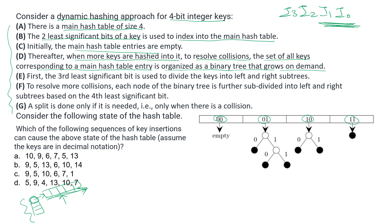How does the tree exactly grow? The third least significant bit, i2, is used to divide the keys into left and right subtrees. If i2 is 0, the key goes left; if it is 1, the key goes right. That is how the binary tree grows to resolve more collisions.